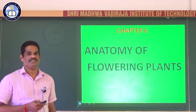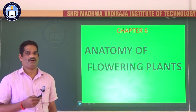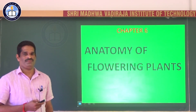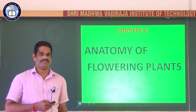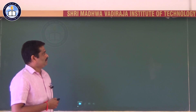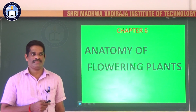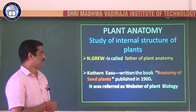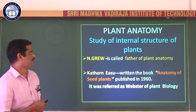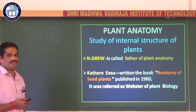In angiosperms, there are two groups of plants, that is monocotyledon and dicotyledon plants. Here we are going to study the internal details of both dicotyledon as well as monocotyledon plants. The study of internal structure of plant is called plant anatomy. What is plant anatomy? The study of internal structure of plants is called plant anatomy.